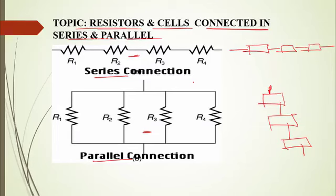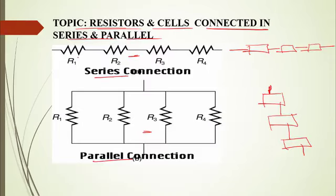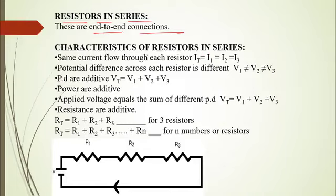In today's lesson we're going to see all about resistors and how these connections are made. We'll start with the connection of resistors in series. When we talk about resistors being connected in series we mean end-to-end connections, as seen in the previous slide. When resistors are connected in series, one of the first characteristics is that it is the same current that flows through each resistor.